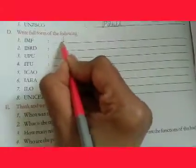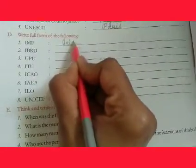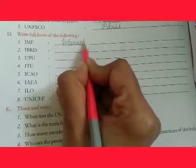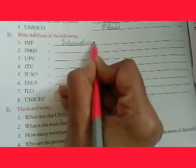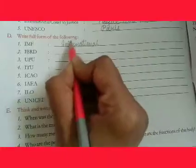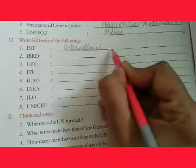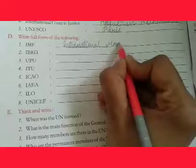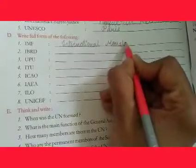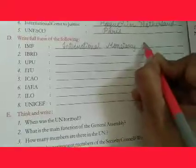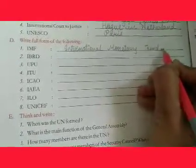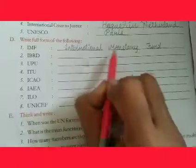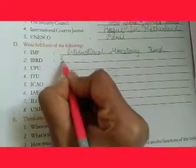First number is IMF. The full form is International — I-N-T-E-R-N-A-T-I-O-N-A-L — Monetary — M-O-N-E-T-A-R-Y — Fund — F-U-N-D. IMF: International Monetary Fund.